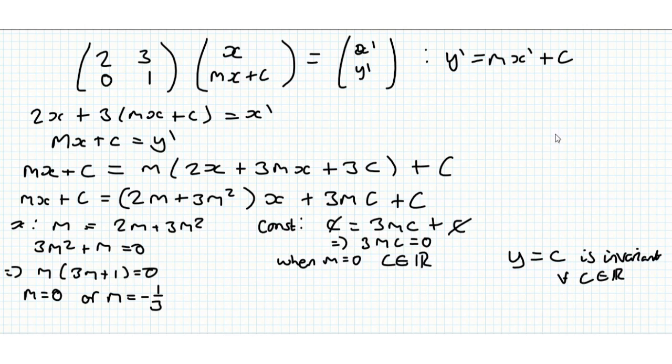So any line that's just got a constant y coordinate, a straight line, is an invariant line. And this makes sense, because if you look at this transformation, when we multiply by the y coordinate we get 0x contribution, and we just multiply 1 by the y, so that line is not going to be moved, it's just going to stay as a flat line anyway.